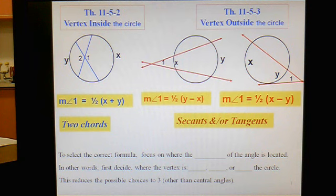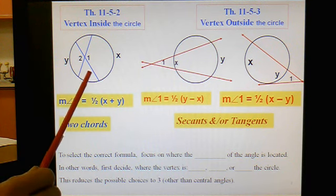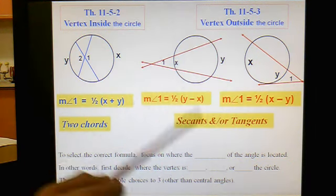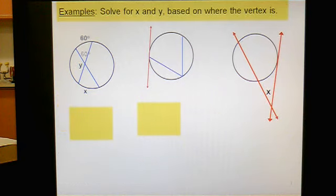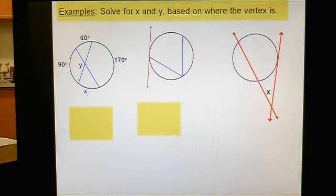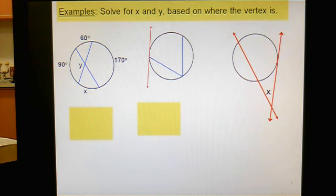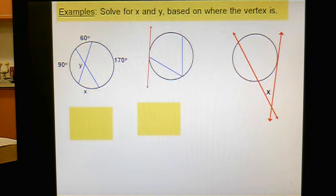And you know, the edge of the circle is the easiest one because it's just half. Inside the circle is the average. If it's outside the circle, you've got to do this subtraction thing and divide by two. So I'm going to pause it here for a second and let you try this first example on your own. Try to find x. Try to find y. And I'll be back in a minute.